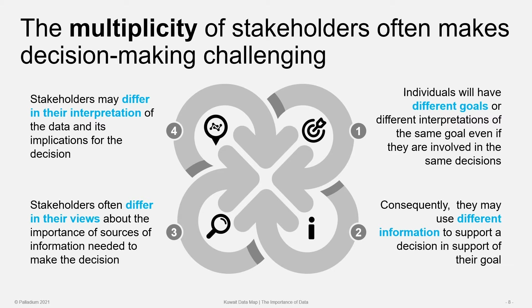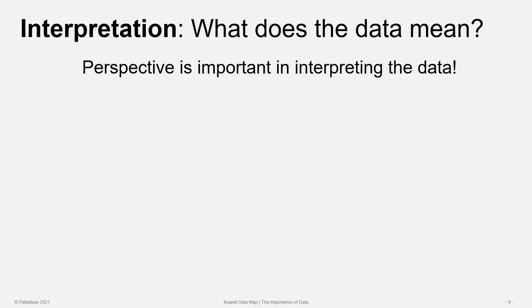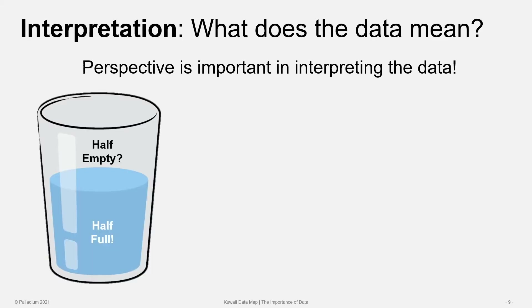Even if stakeholders agree on the kind of data that's important to use, they may not agree on where the data should come from, and they may not agree on the interpretation of that data — they may see things differently. This point about interpretation is important; it is often the point of conflict or disagreement among stakeholders in reaching decisions. We're all familiar with the conundrum: is the glass half full or is it half empty? Optimists say the glass is half full, and pessimists say it's half empty.